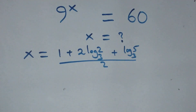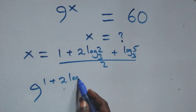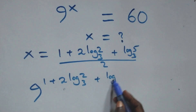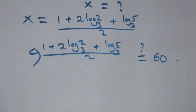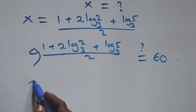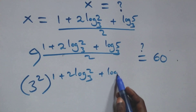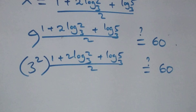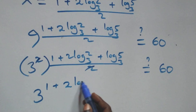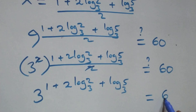Now let's verify: substituting back, what we have is 9 raised to power (1 + 2·log₃2 + log₃5)/2 equals 60. We can write 9 as 3², which is raised to the power (1 + 2·log₃2 + log₃5)/2. This equals 60. The 2 in the exponent cancels, giving 3 raised to power (1 + 2·log₃2 + log₃5) equals 60.